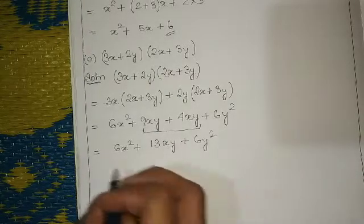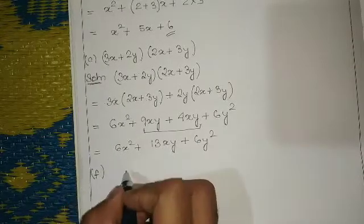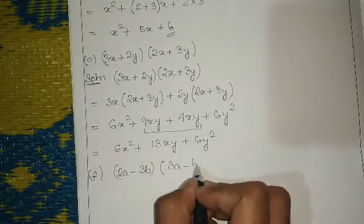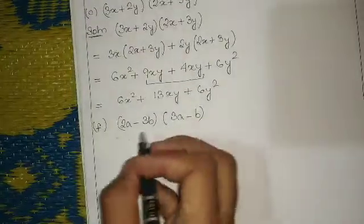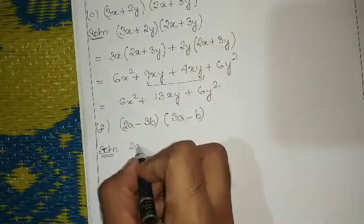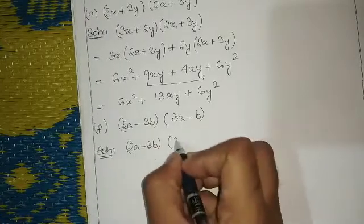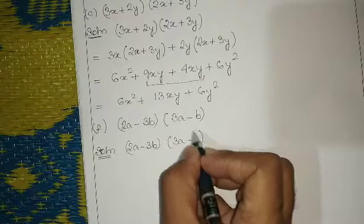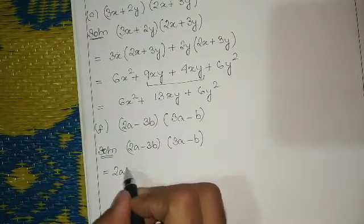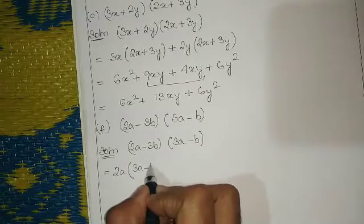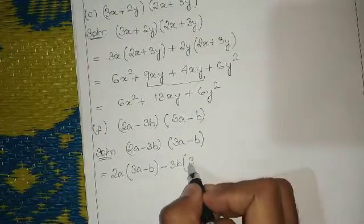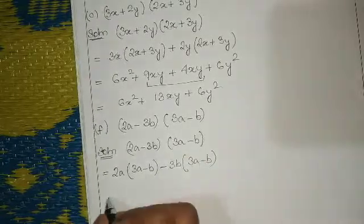Next, let us solve question number f: it is given twice a minus thrice b times thrice a minus b. Applying the same distributive rule as above, we write twice a multiplied by the second expression thrice a minus b, then the second term minus thrice b is also multiplied by the second expression thrice a minus b.